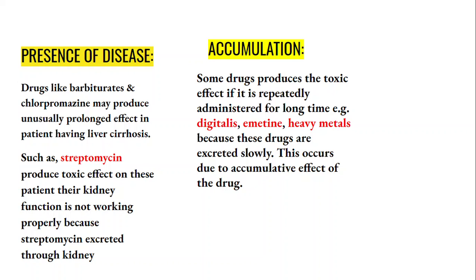The next factor is presence of disease. Drugs like barbiturates and chlorpromazine may produce unusually prolonged effects in patients with liver cirrhosis, which is also common in alcoholic patients. Drugs such as streptomycin produce toxic effects in patients whose kidney function is impaired, since streptomycin is excreted through the kidney. The next factor is accumulation — some drugs produce toxic effects if repeatedly administered over a long time, accumulating in the body as excretion is slow. Examples include digitalis, emetine, and heavy metals.